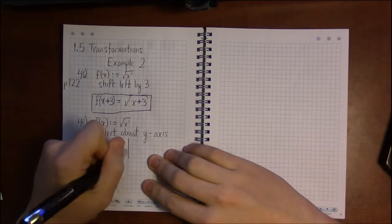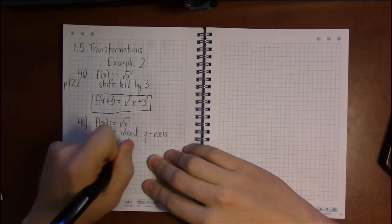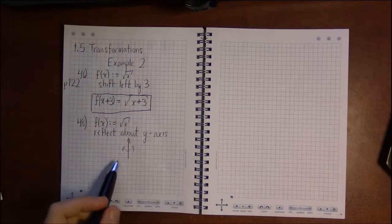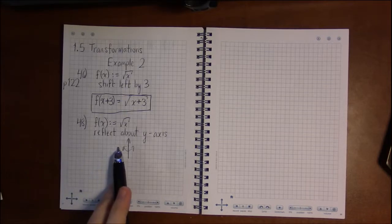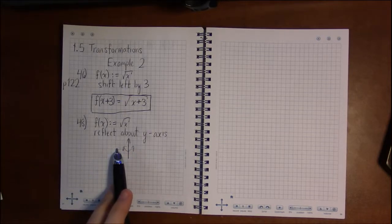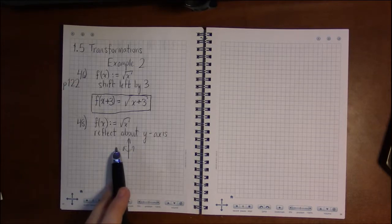So the y-axis is the vertical axis. So to do this reflection, we're going to be flipping left to right and right to left. So that's a horizontal reflection.